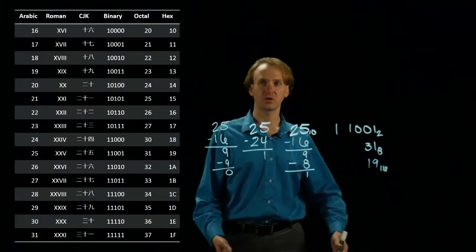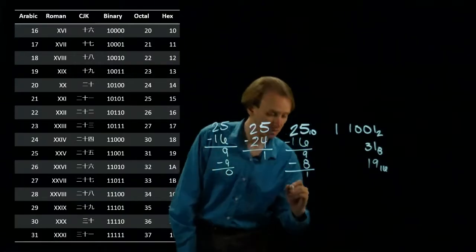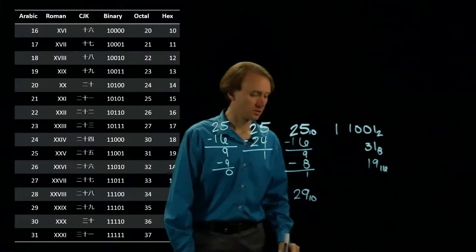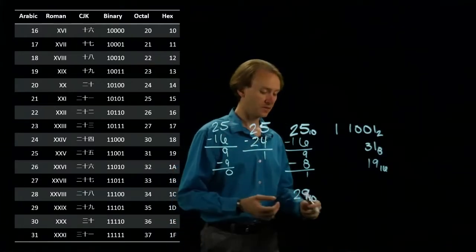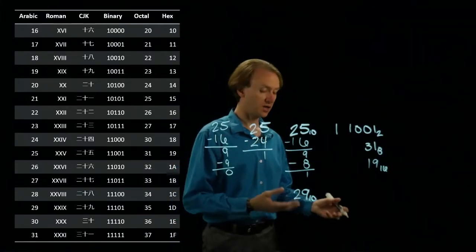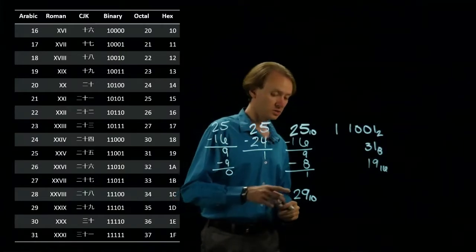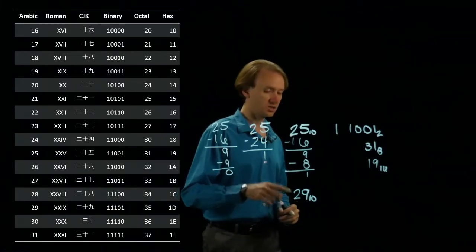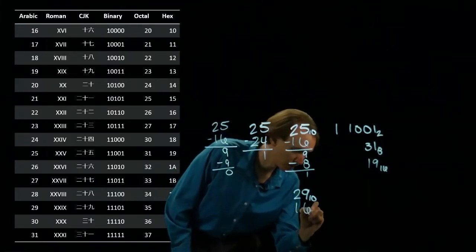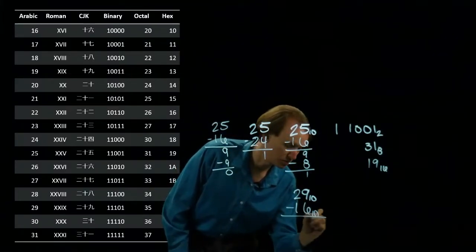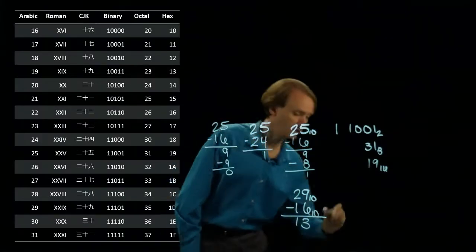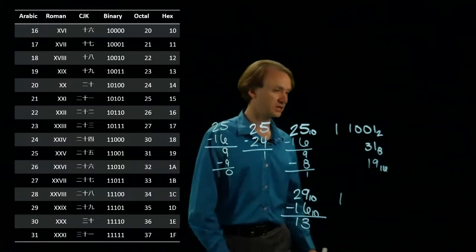If we pick a different number, like, say, 29, we'll do the same sort of thing. If I'm converting this number to binary, I'm going to look for powers of 2. So I know 32 is larger than 29. The next one down is 16 again. So I'll subtract that. That will leave me with 13.